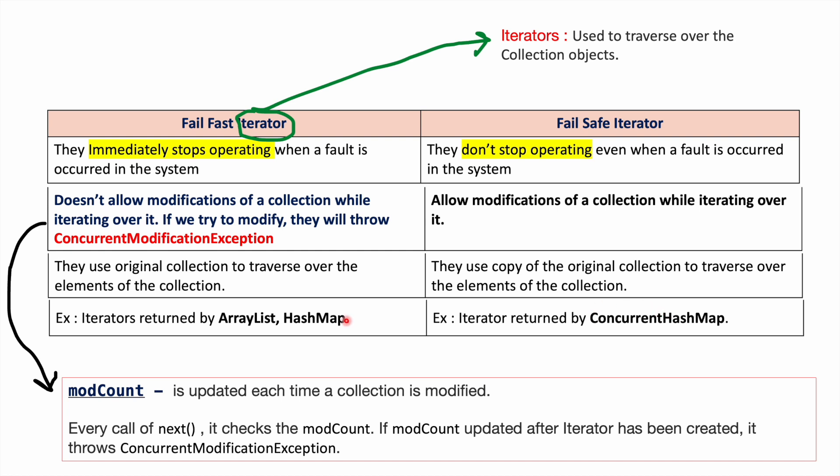Hope we understand why in case of HashMap it is giving ConcurrentModificationException, but not in the case of ConcurrentHashMap. This is all about this video. We'll see you in the next video. Bye-bye.